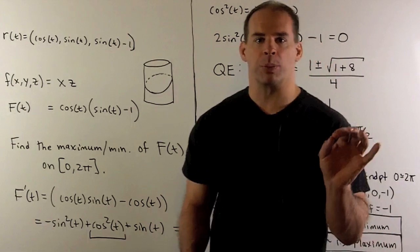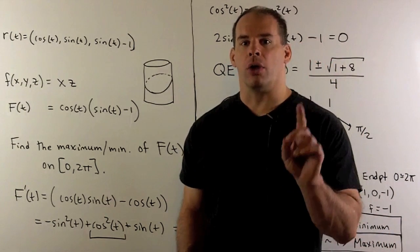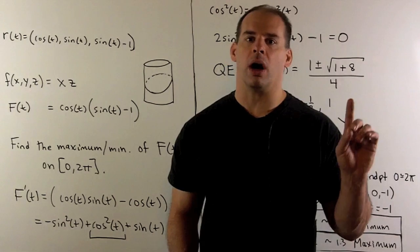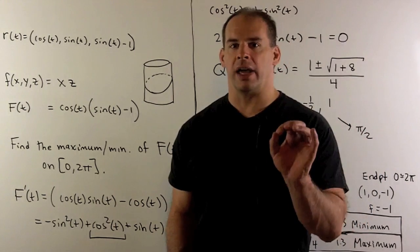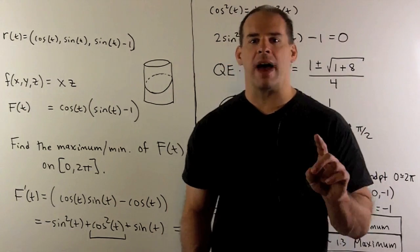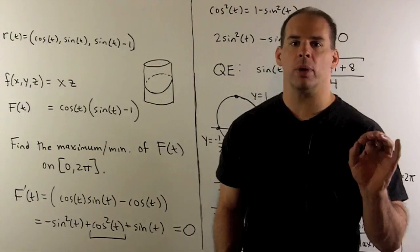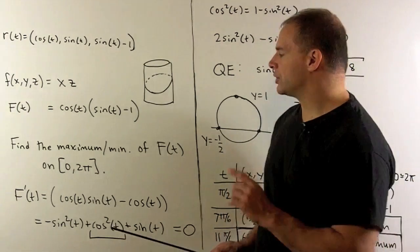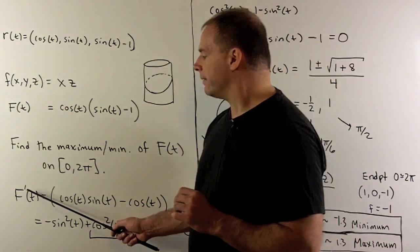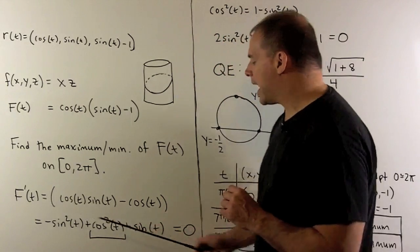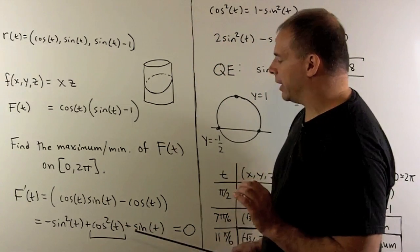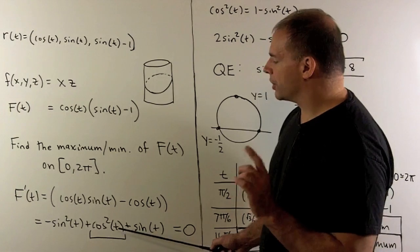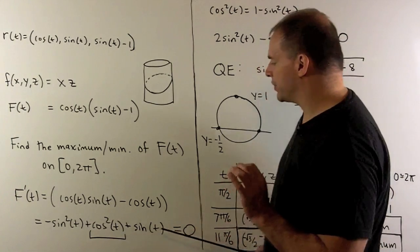To solve this problem, we find all the critical points of F where the derivative equals 0 or is undefined, take the endpoints, evaluate F at all those points, and compare to find the maximum and minimum. We take the derivative of capital F and work that out. The key step is for the cosine squared term — we substitute to get everything in terms of sine.